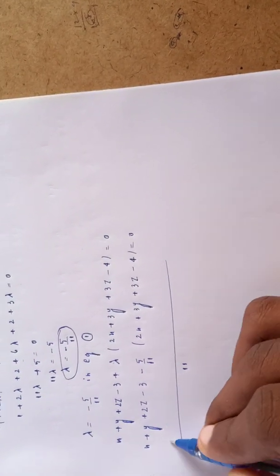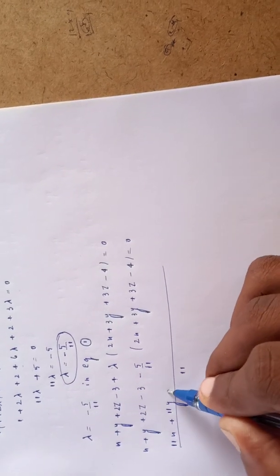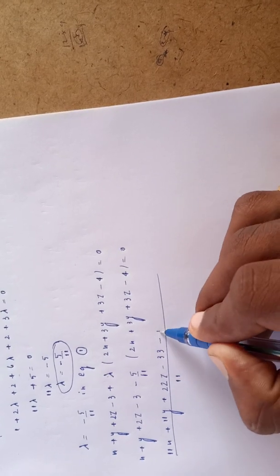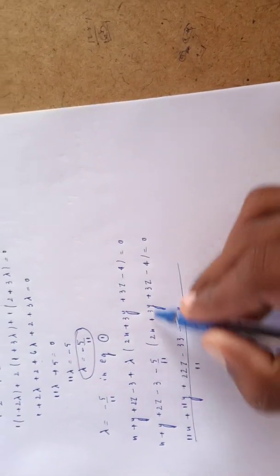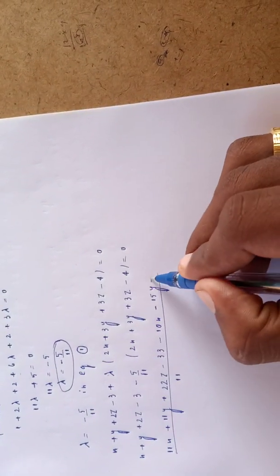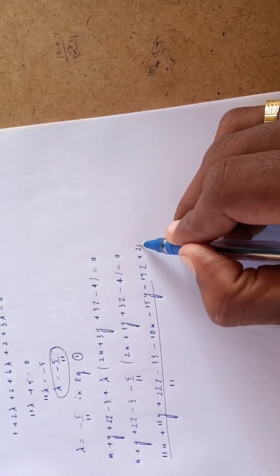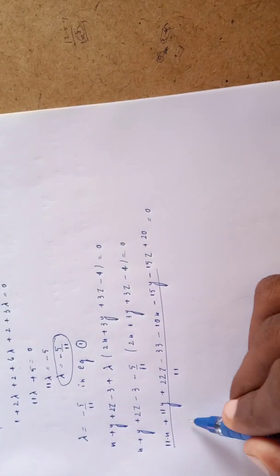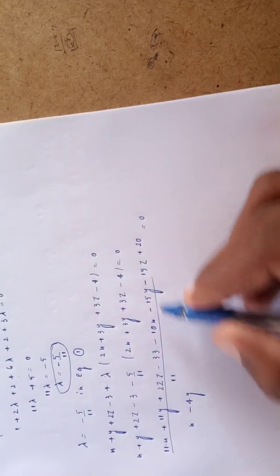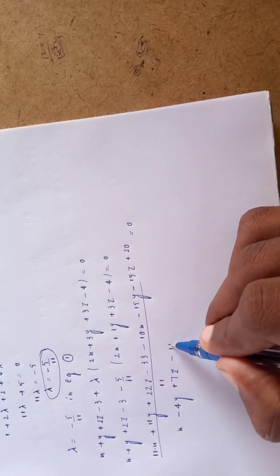Taking LCM 11 and expanding: 11x+11y+22z-33 - 10x-15y-15z+20 = 0, which simplifies to x - 4y + 7z - 13 = 0. This is equation number 4.